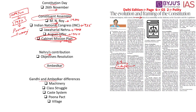Nehru's contribution to the constitution of India is immense. It was he who released what is called the Objectives Resolution — the initial outline of the constitution's value system, similar to a preface of a book. This gave rise to the Preamble of the Indian constitution, exposing the philosophy and ethos of what the constitution is all about.